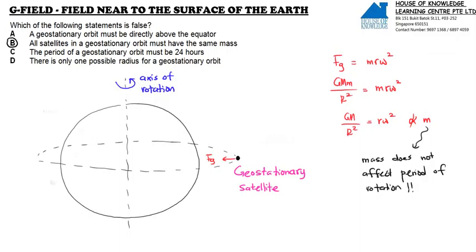Which statement is false? First of all, see option A: a geostationary satellite is directly above the equator. Definitely right. It must be directly above the equator.